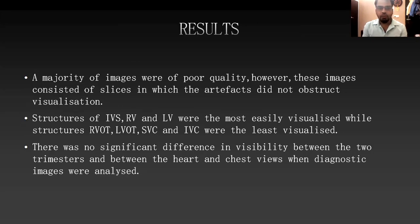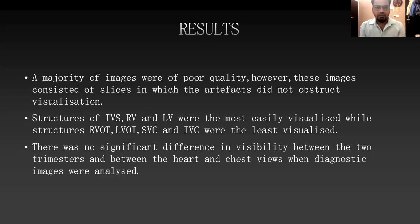The results showed that the majority of images were of poor quality; however, these images consisted of slices in which artifacts did not obstruct visualization. The interventricular septum and both ventricles were most easily visualized, while structures like the RVOT, LVOT, and superior and inferior vena cava were least visualized. There was no significant difference in visibility between the two trimesters or between the heart and chest views.